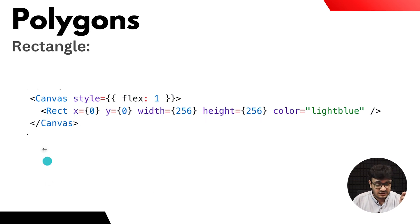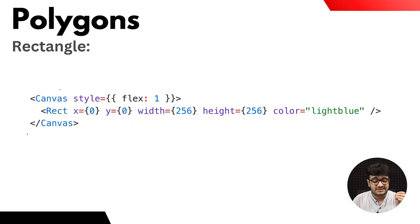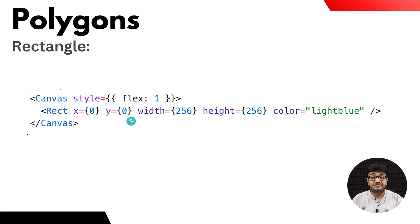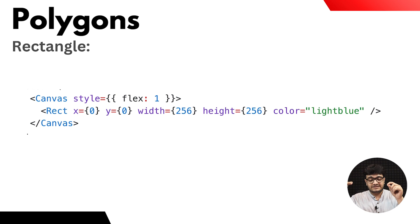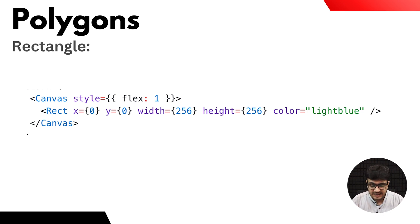For a rectangle, you define the x-axis and the y-axis — this is where the rectangle starts from, which is the top-left corner — and you define the width and the height. A width of 256 means starting from the x-axis and moving 256 units along it. A height of 256 means starting from y at 0 and moving down 256, which creates a square or rectangle, and then you define the color of the shape.